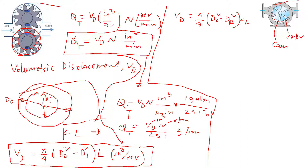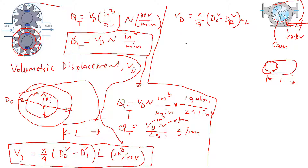So we can say cam diameter squared minus rotor diameter squared times the length L, where L is the width of the vane pump — essentially a cylindrical piece. That is the volumetric displacement for the vane pump.